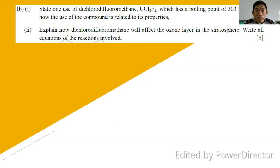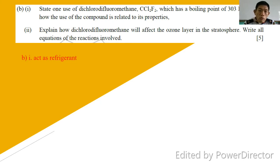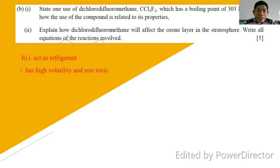Question 4b, part one: state one use of dichlorodifluoromethane CCl2F2, which has a boiling point of 303 K, and explain how the use is related to its properties. One use is as a refrigerant; you can also use it as an aerosol propellant or fire extinguisher. If you say refrigerant, you must state that it has high volatility and is non-toxic.